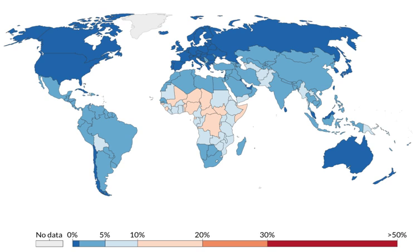Child mortality refers to the number of child deaths under the age of 5 per 1,000 live births. However, child mortality can be broken down into more specific terms such as prenatal, perinatal, neonatal, infancy, and under-5. Prenatal refers to child death before birth; perinatal, child death before one week of birth; neonatal, child death before 28 days of birth; infancy, child death before the first birthday; and under-5 mortality refers to any deaths from birth to the fifth birthday.